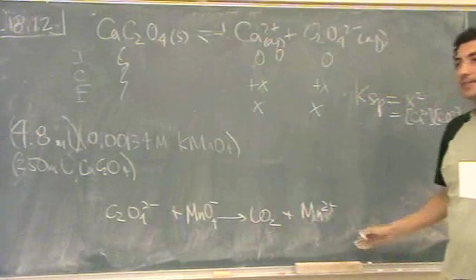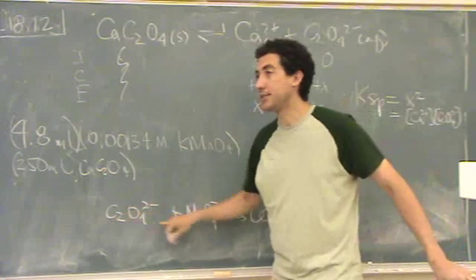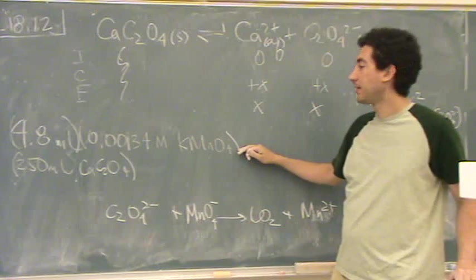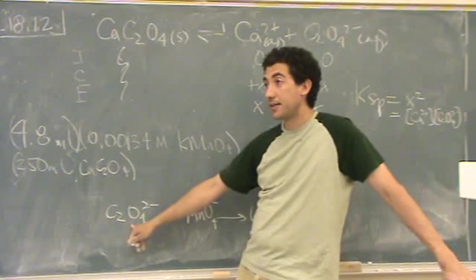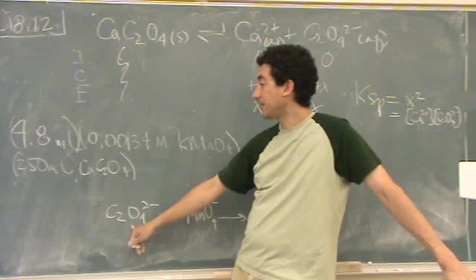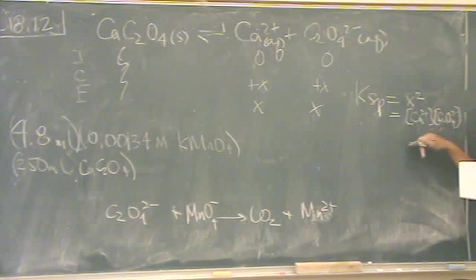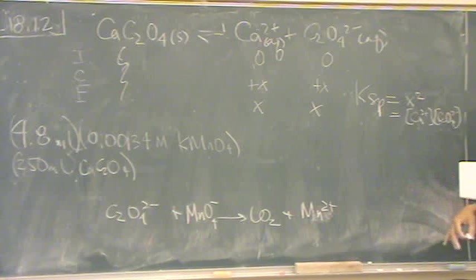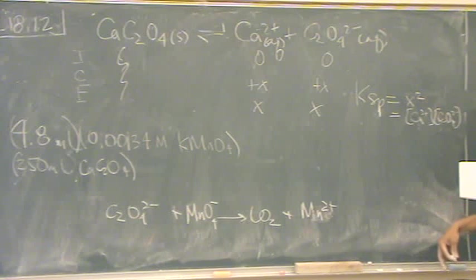Oxalate goes to CO2, and the permanganate goes to Mn2+. So you'd have to balance this using Chem 2A redox techniques. You need this molar ratio right here, because what you're going to do is find the moles of permanganate, molar ratio to find the moles of the oxalate in your titration divided by the volume to find the molarity here that you're going to square to get Ksp. I didn't want to balance the redox because I'm not specifically going to test you on redox. This was just fun in the homework, so you're going to have fun doing the redox.